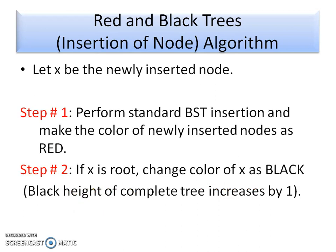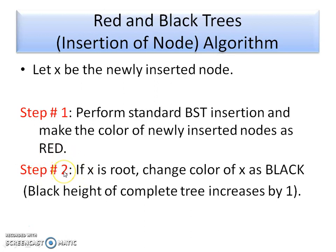Now let's think about the steps we need to follow for insertion of a node. Let X be the newly inserted node. The first step is to perform a standard BST insertion and make the color of the newly inserted node red. Always keep in mind the newly inserted node will be red. The next step is if the inserted node is a root node, then change the color of X to black, because the root is always black — that is a property of the Red-Black tree.